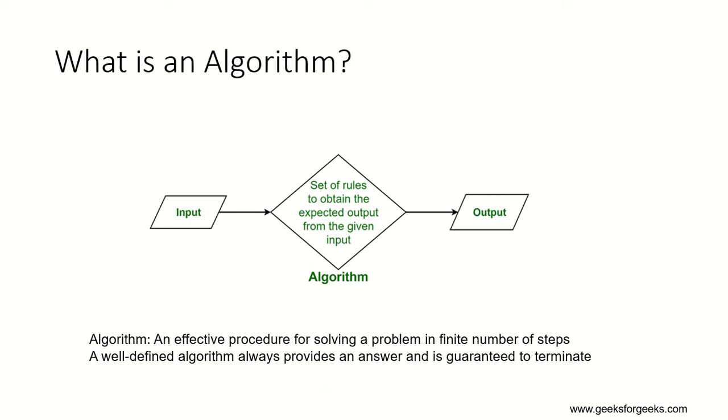We know that when we want to write any program, first we should write an algorithm which is a set of rules that should be followed in order to solve a problem. If we are given a particular input, what are the steps that need to be followed? What are the set of rules so that the expected output can be obtained?